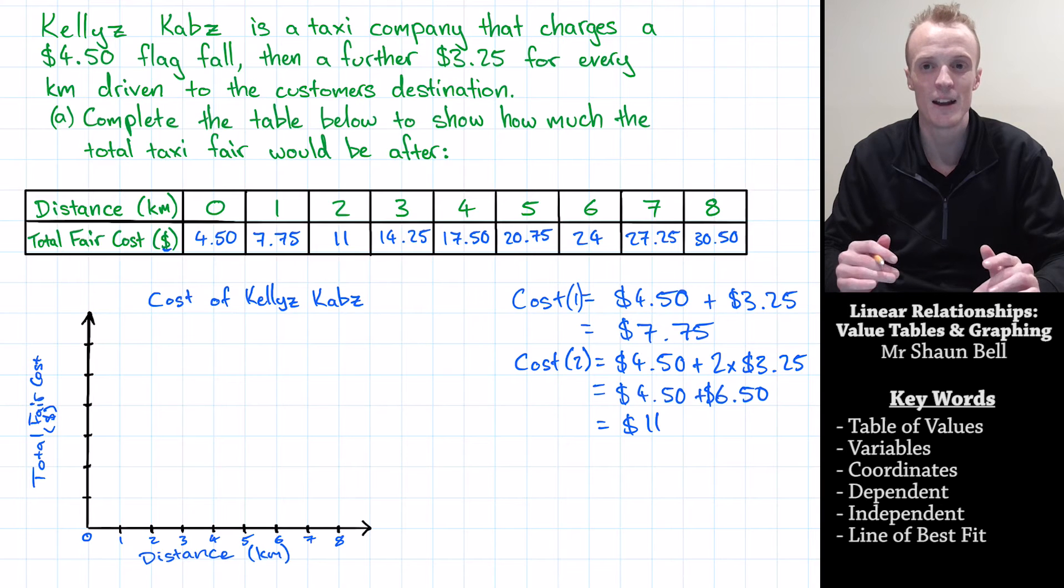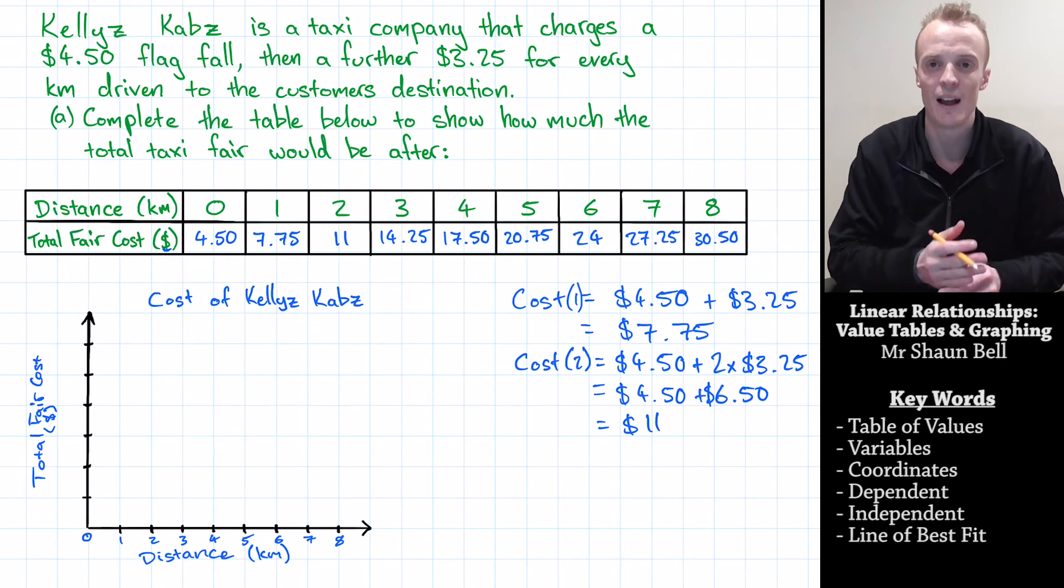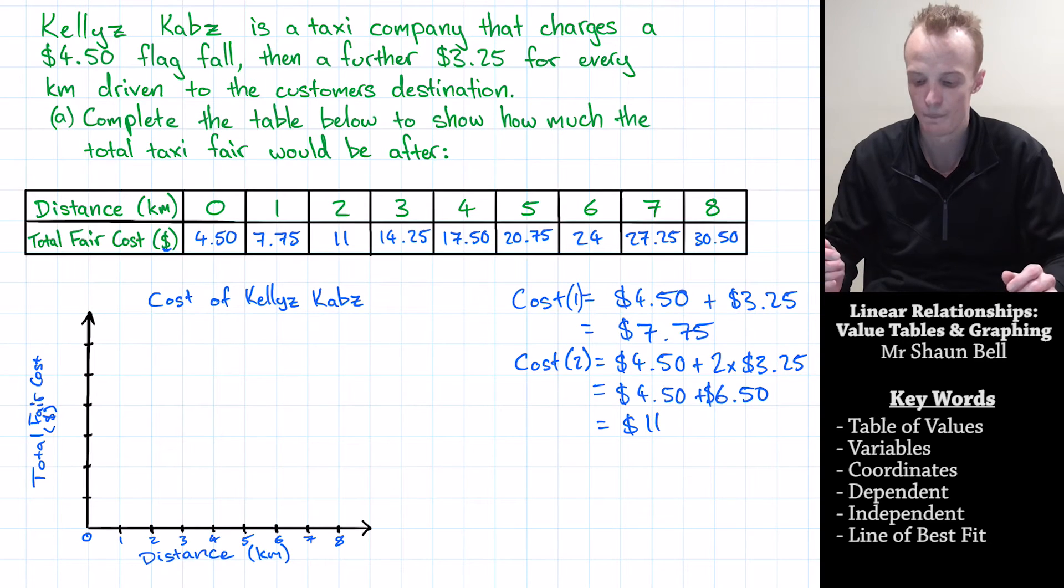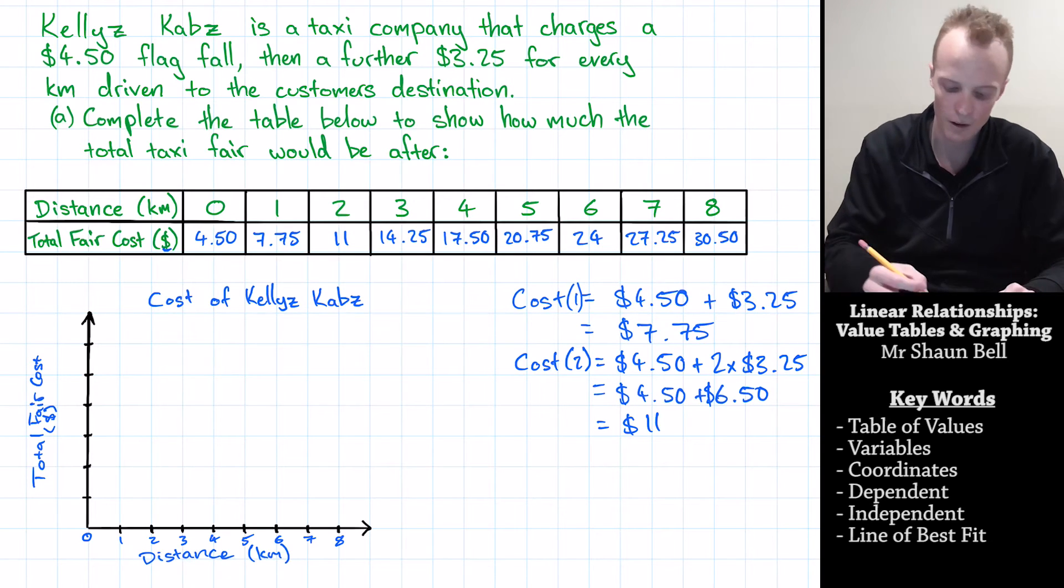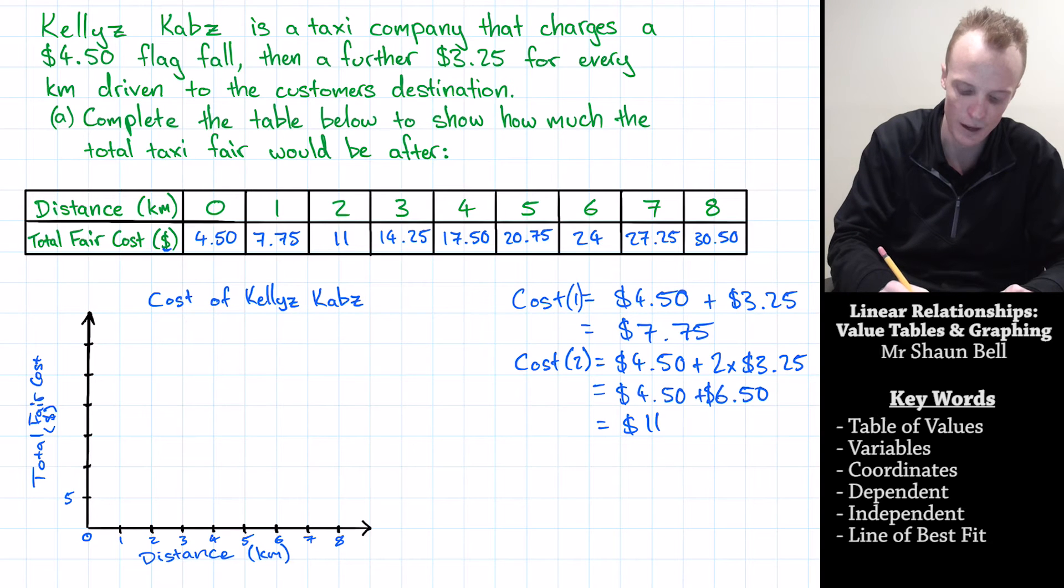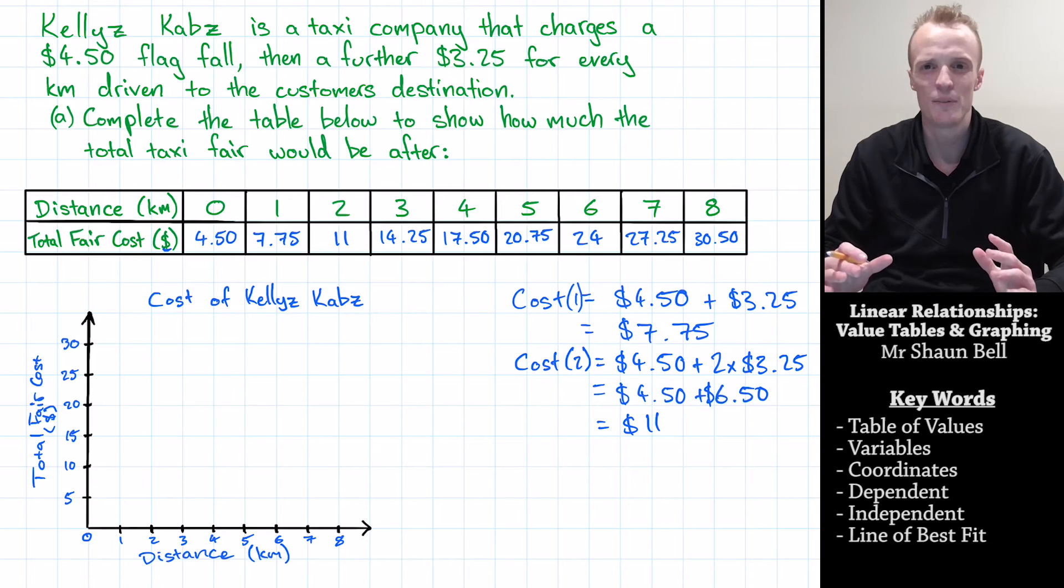Finally, I need to have a look at my scale for the y-axis. Following the same steps, I need to look at what is going to be most appropriate starting from zero, but going up by the same amount each time. When I look at my table of values, I notice that I must get up to $30.50. So what I'm going to do is I'm going to go up by $5 increments with each step.